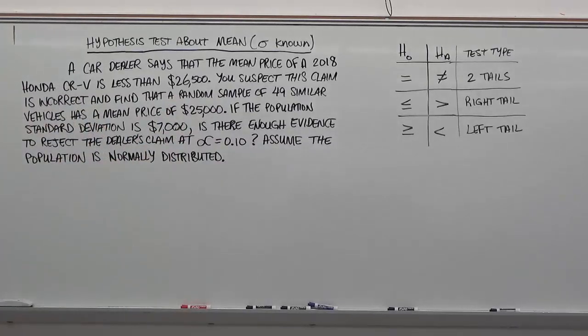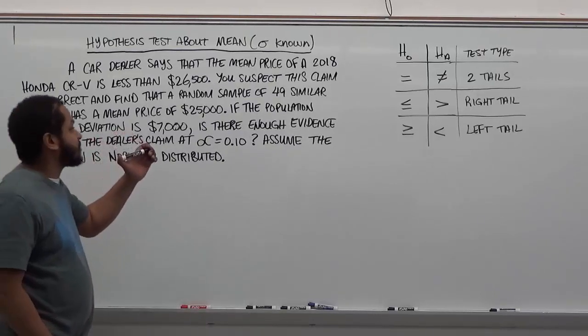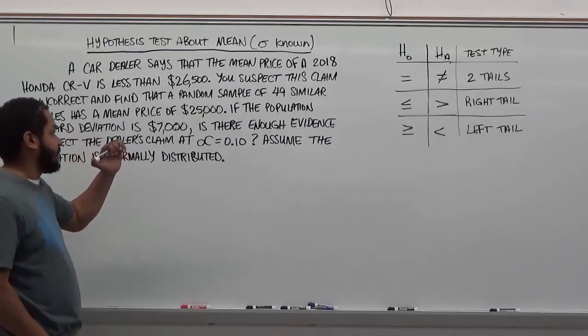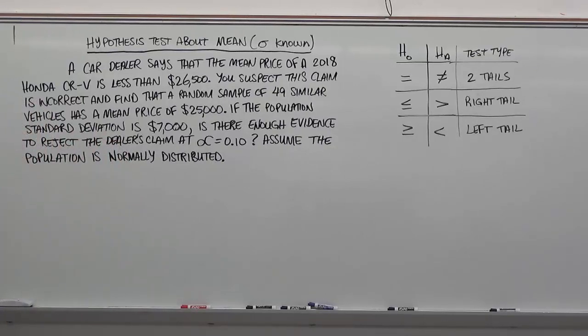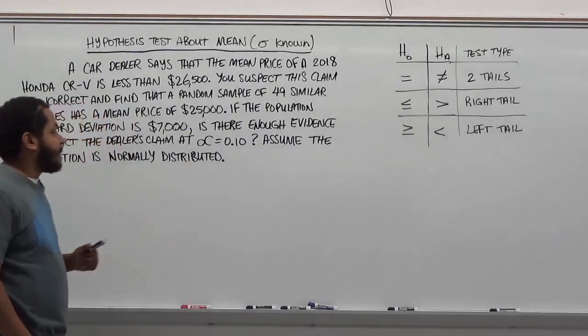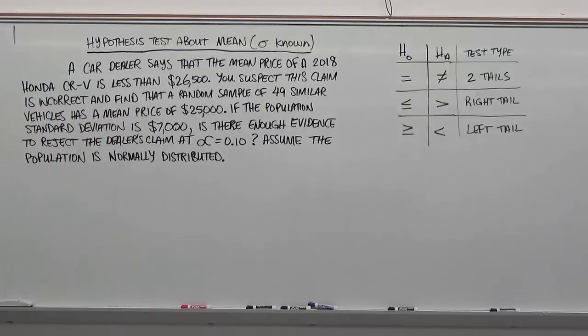A car dealer says that the mean price of a 2018 Honda CR-V is less than $26,500. You suspect this claim is incorrect and find that a random sample of 49 vehicles has a mean price of $25,000. If the population standard deviation is $7,000, is there enough evidence to reject the dealer's claim at alpha equals 0.10? Assume the population is normally distributed.